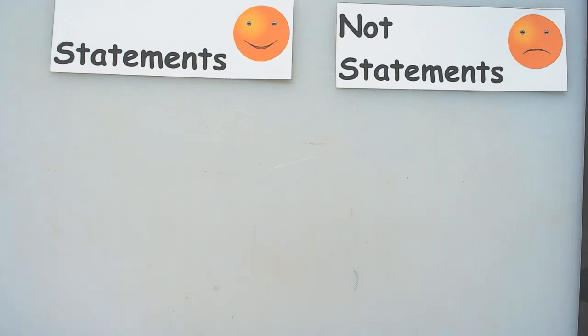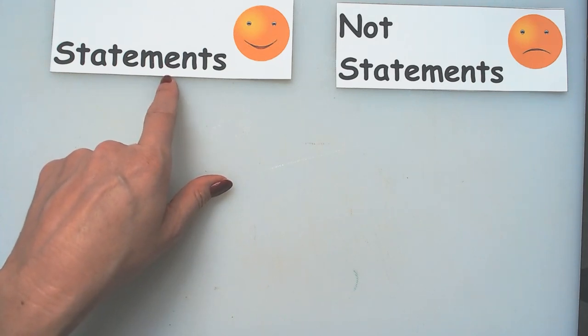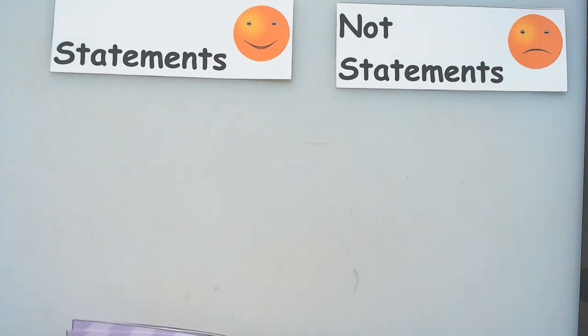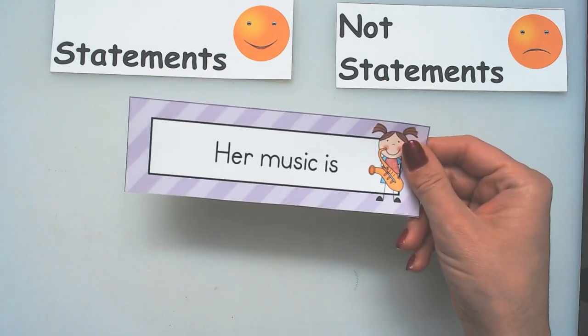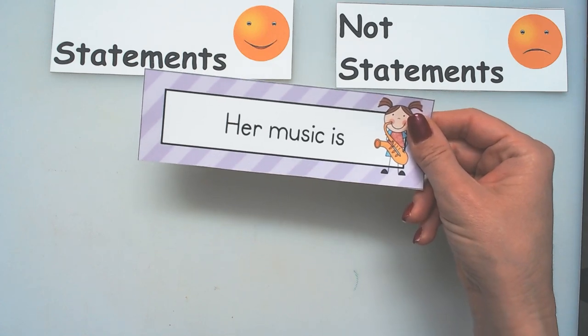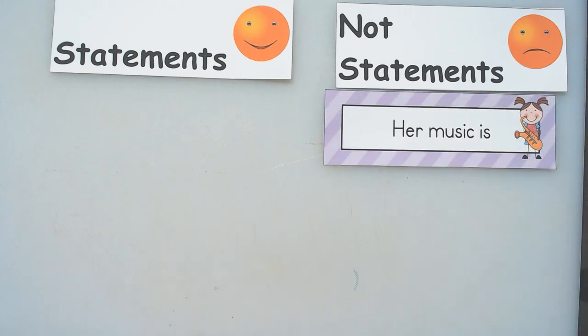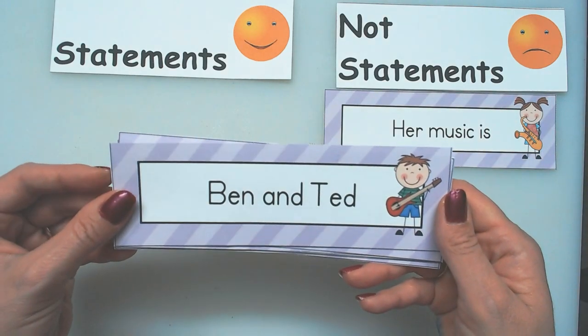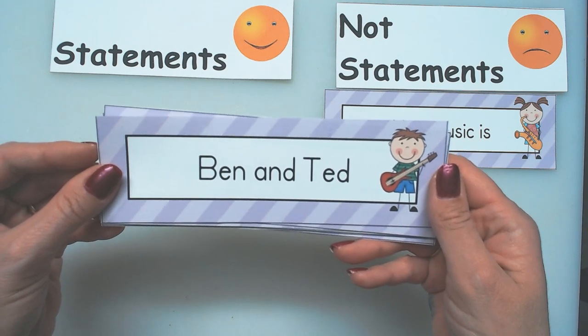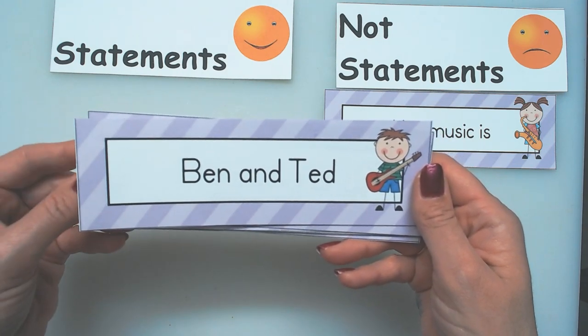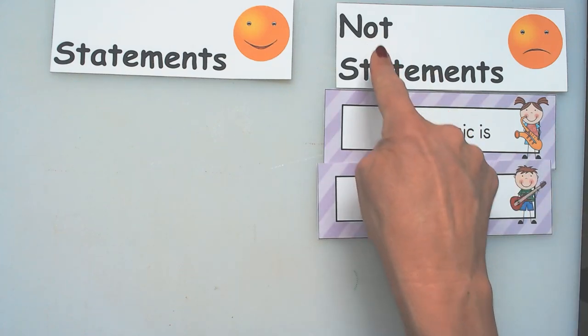So we're going to sort these, and you may not know how to read, but you think if it's a statement that means it's telling us something, has a noun and a verb in it, and it's telling us something, ends with a period. Or if it doesn't, it's not a statement. So her music is, you know, they never finished that. It's not a statement. Ben and Ted. No, never said what they did. So I'm going to put it under not a statement.